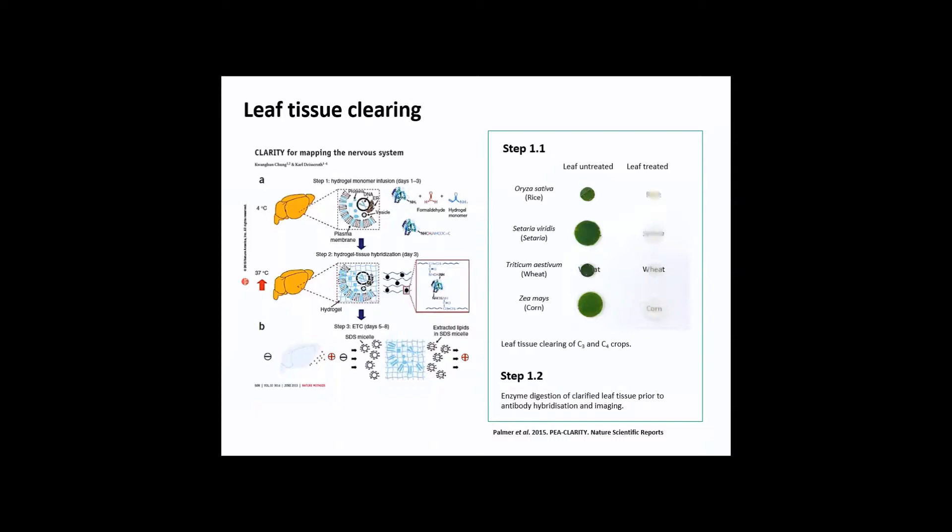I did a similar thing with plant tissue. In the right panel, you can see the leaf untreated, which appears green. After clearing, fixing and then clearing, you can see they become translucent. It depends on your tissue. Rice or Oryza sativa is tough and not really completely clear, but corn and wheat are softer and more transparent or translucent.